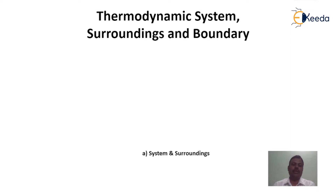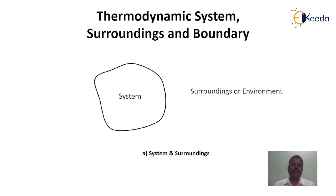System and surroundings can be graphically represented in this way. If this is the system, everything external to the system is surroundings or environment. Both the system and surroundings are separated by an imaginary line that is called as boundary. Here, boundary will be either fixed or movable. Both system and surroundings together are called as universe.